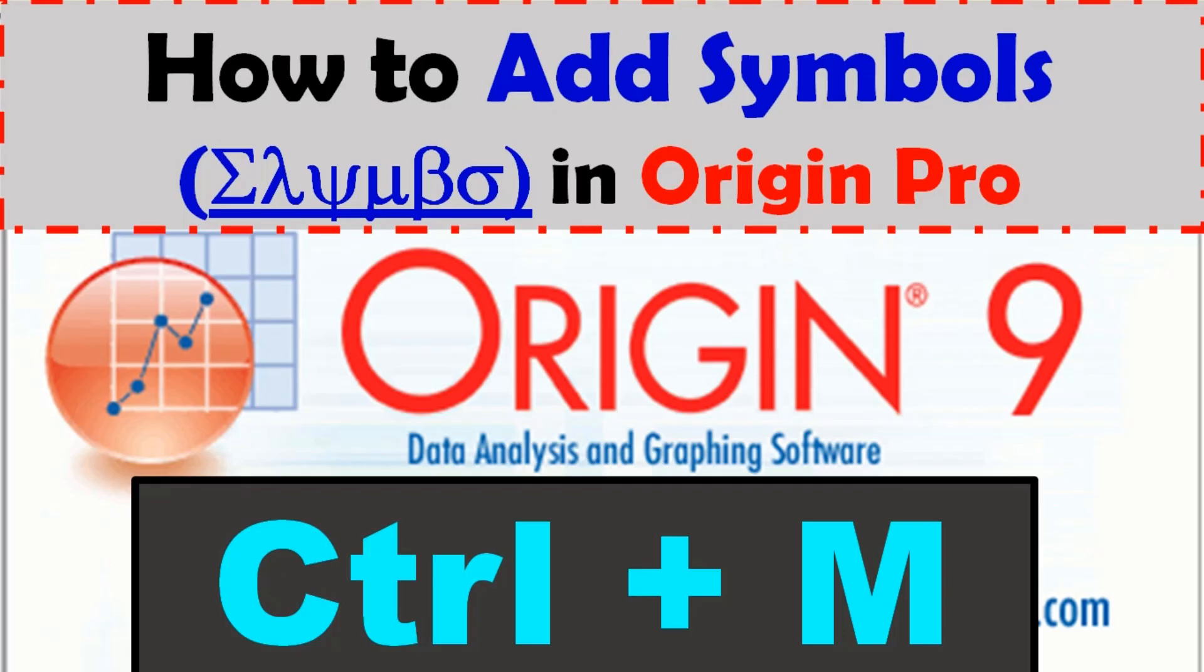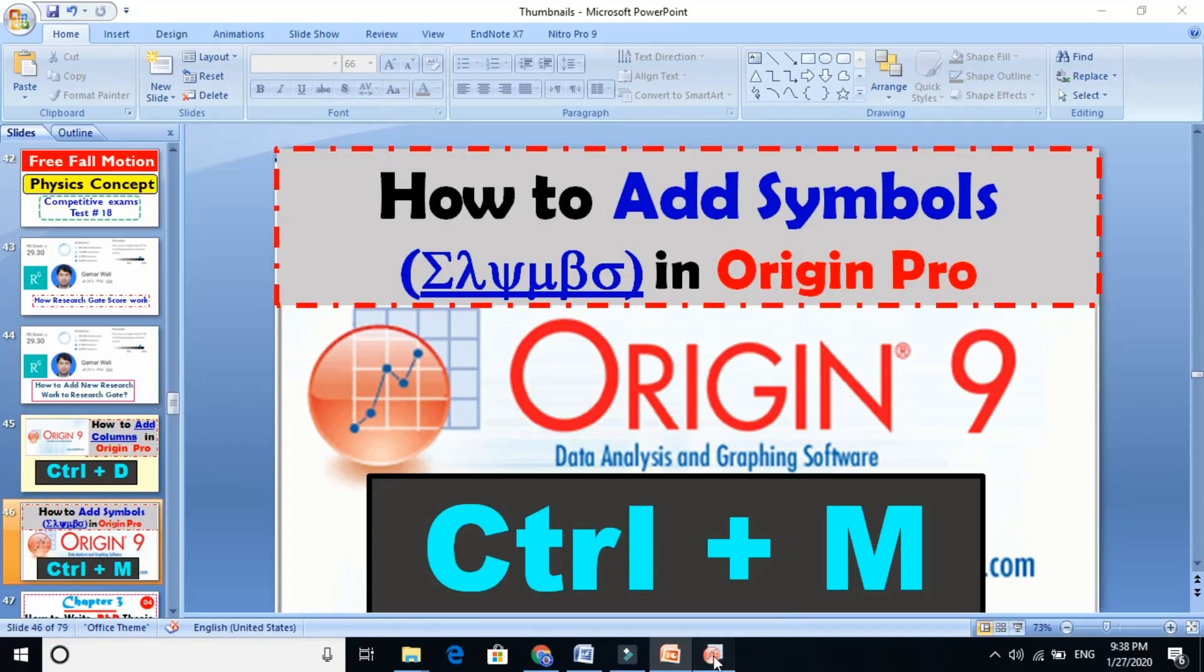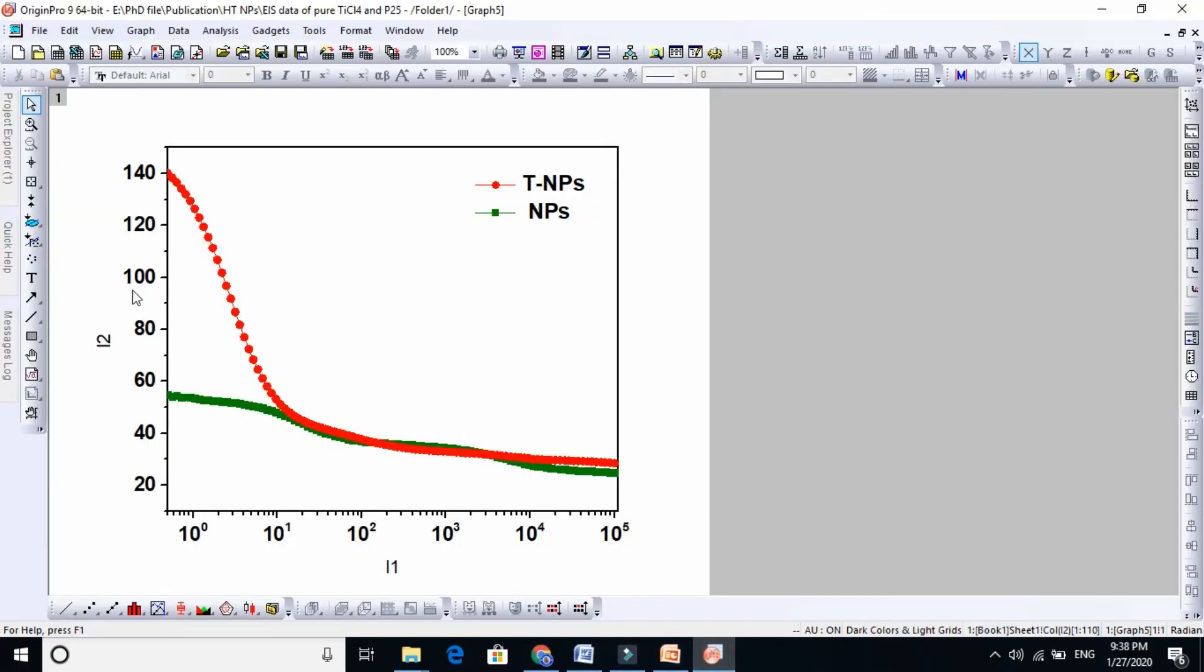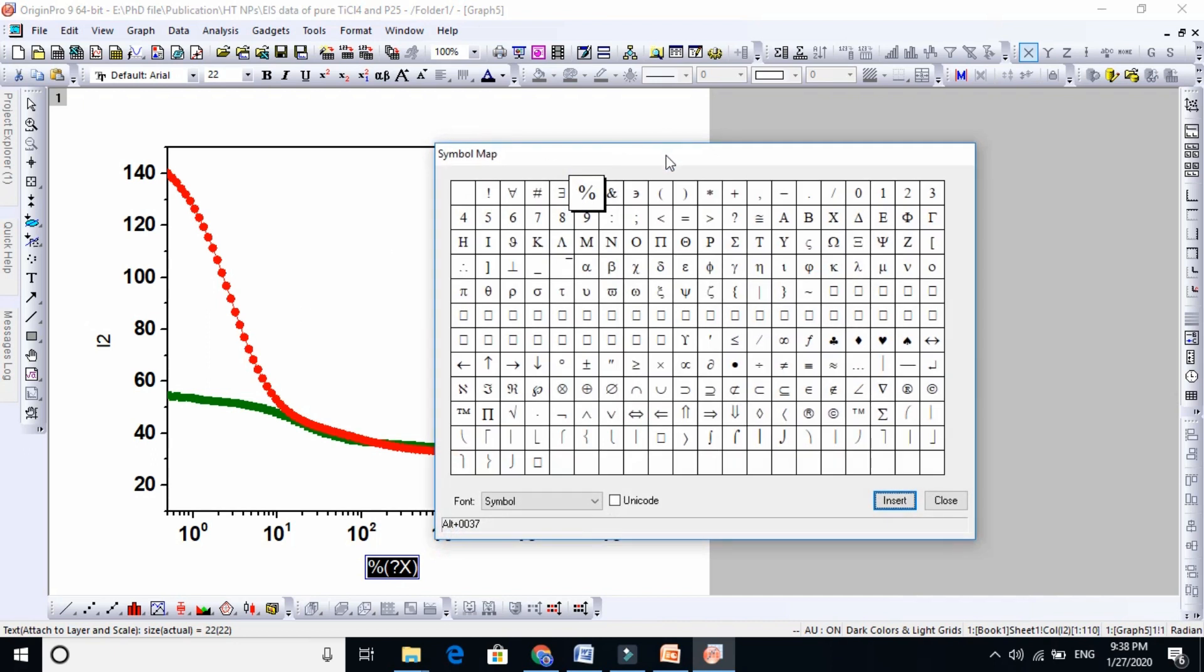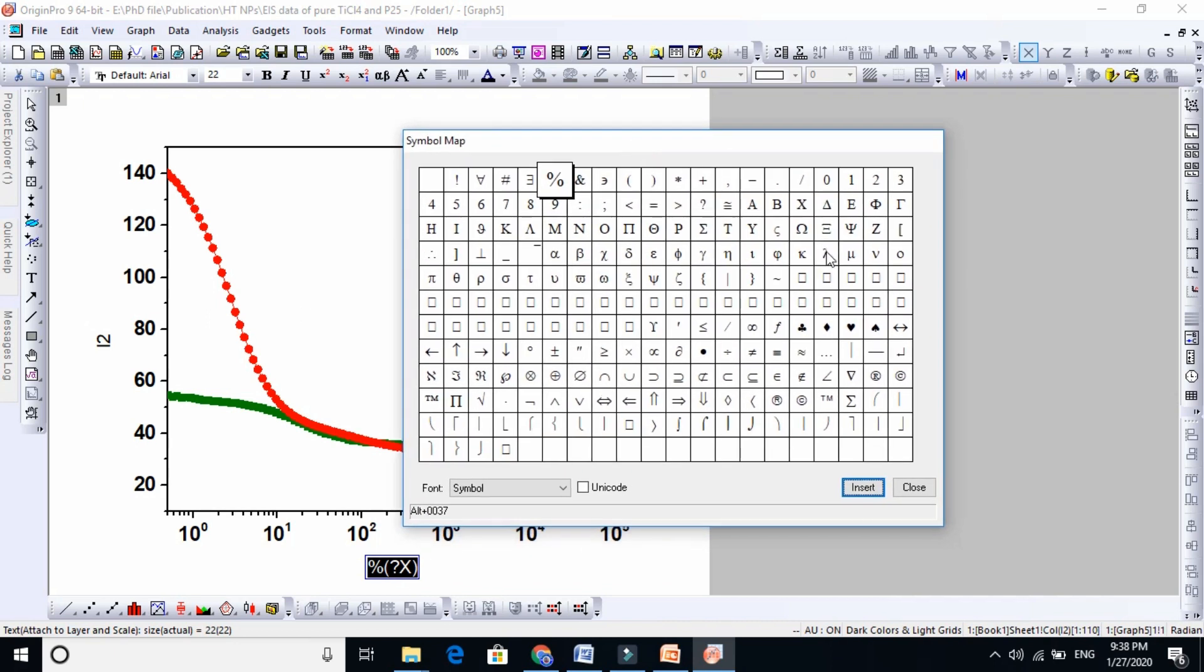Let's show this in real time. This is the graph, and if I want to put wavelength here, we need to put lambda. Just press Ctrl+M, so a new window will open here and this is the lambda.